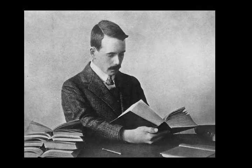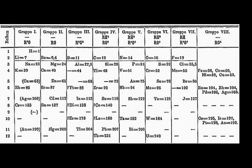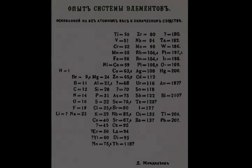Naturally occurring elements usually occur as mixes of different isotopes; since each isotope usually occurs with a characteristic abundance, naturally occurring elements have well-defined atomic weights, defined as the average mass of a naturally occurring atom of that element. Today, 118 elements are known, the first 94 of which are known to occur naturally on Earth today.